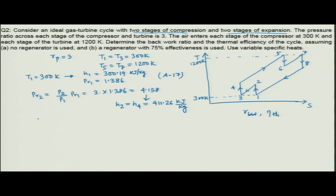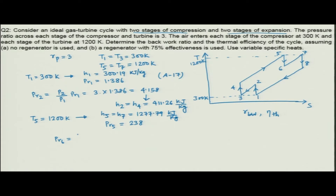At state 5, T_5 = 1200 Kelvin (inlet of first turbine). From Table A-17, H_5 = H_7 = 1277.79 kJ/kg and P_r5 = 238. For point 6: P_r6 = (P_6/P_5) × P_r5 = (1/3) × 238 = 79.33. From Table A-17 with interpolation, H_6 = H_8 = 946.36 kJ/kg.